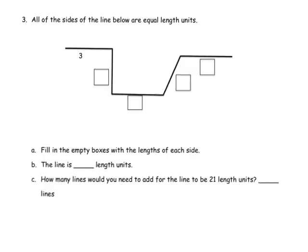And our last slide here, it says all of the sides of the line are of equal lengths. Okay, so we've got 3 units right here. So that means this guy is 3. It means this guy is 3. This slanted guy is 3. And this guy is 3. The first question down here, A, fill in the empty boxes. Well, that's what I just did. Good.